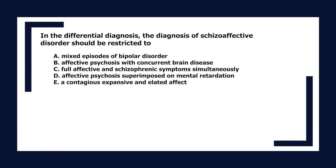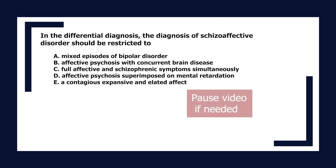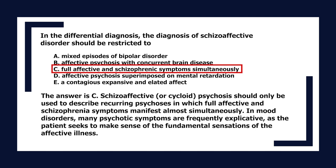In the differential diagnosis, schizoaffective disorder should be restricted to: A. Mixed episodes of bipolar disorder. B. Affective psychosis with concurrent brain disease. C. Full affective and schizophrenic symptoms simultaneously. D. Affective psychosis superimposed on mental retardation. E. A contagious, expansive, and elated affect. The answer is C. Schizoaffective or cycloid psychosis should only be used to describe recurring psychosis in which full affective and schizophrenia symptoms manifest almost simultaneously. In mood disorders, many psychotic symptoms are frequently explicable as the patient seeks to make sense of the affective illness.